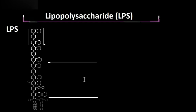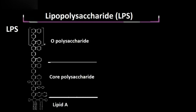Here we have our core polysaccharide, which provides stability. And extending outward from the core polysaccharide is the O polysaccharide, which functions as an antigen and is useful for helping us distinguish the different species of gram-negative bacteria.